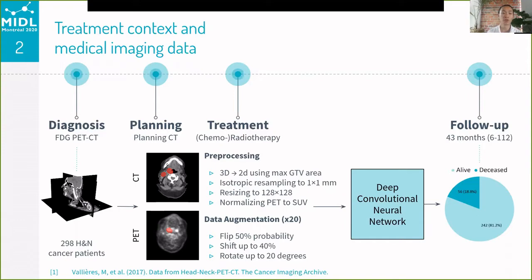The motivation is to reduce the overall timeframe for the patient from diagnosis to end of treatment by providing clinicians with the expected outcome for this particular line of therapy — in this case, radiotherapy. For this, FDG PET-CT images from 298 head and neck cancer patients were acquired from the Cancer Imaging Archive Head and Neck PET-CT public dataset.